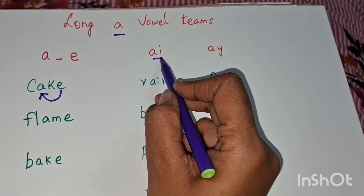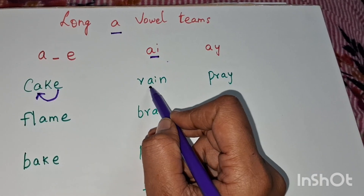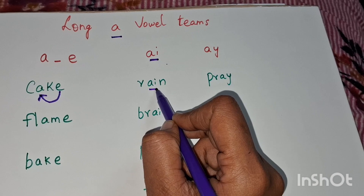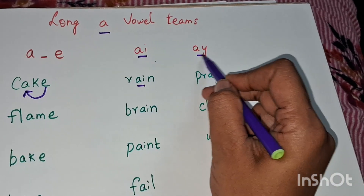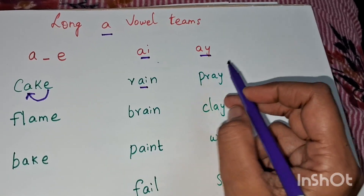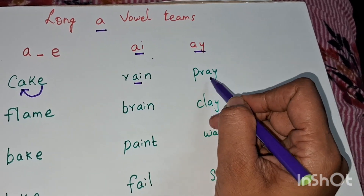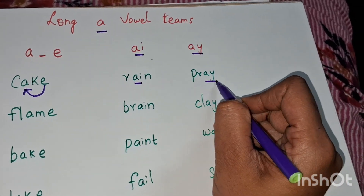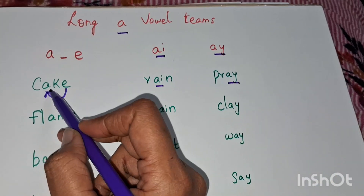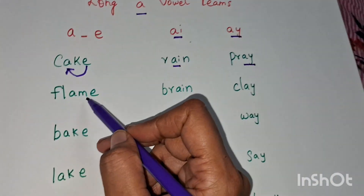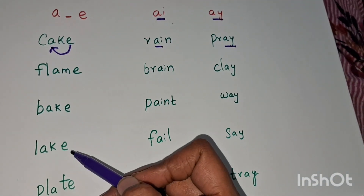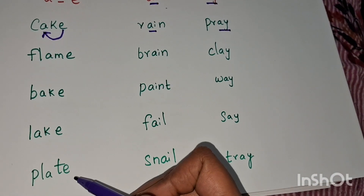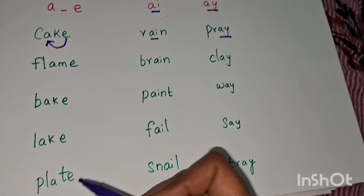This A always comes in the middle of the word. Examples: cake, flame, bake, lake, plate.